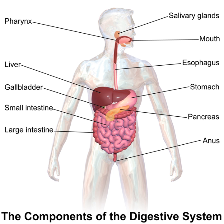There are at least five hormones that aid and regulate the digestive system in mammals, with variations across vertebrates. Gastrin is in the stomach and stimulates the gastric glands to secrete pepsinogen, an inactive form of the enzyme pepsin, and hydrochloric acid. Secretion of gastrin is stimulated by food arriving in the stomach and is inhibited by low pH.